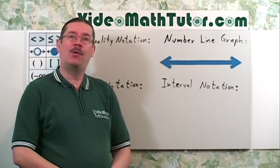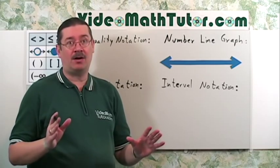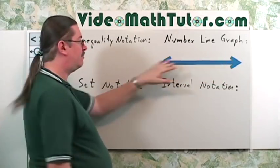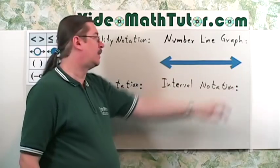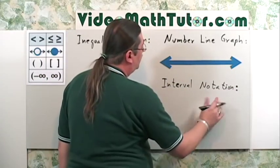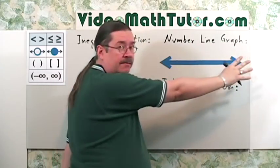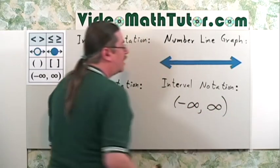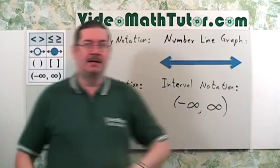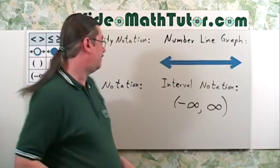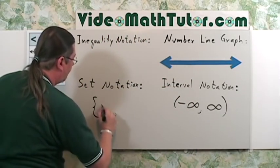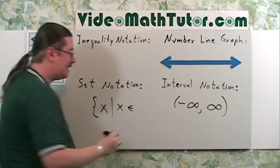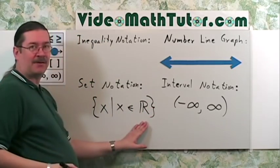For the last basic graph, when you want all values on the number line, there is no inequality notation for this. For a number line, just draw it and shade everything. For interval notation, we're spanning all values from negative infinity to positive infinity — and infinities always use parentheses. For set notation: the set of all x's such that x is an element of the set of real numbers.